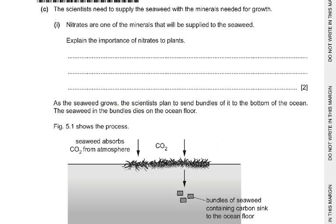Part C of the question: the scientists need to supply the seaweed with the minerals needed for growth. Nitrates are one of the minerals supplied to the seaweed. Explain the importance of nitrates. Nitrates are used to make amino acids, and the amino acids are used to make proteins. Nitrates are also needed for DNA and the nucleotide, because there is a nitrogenous organic base.